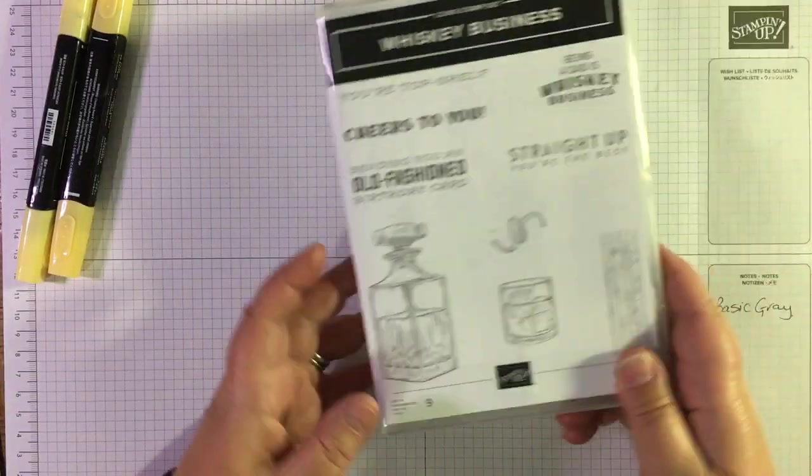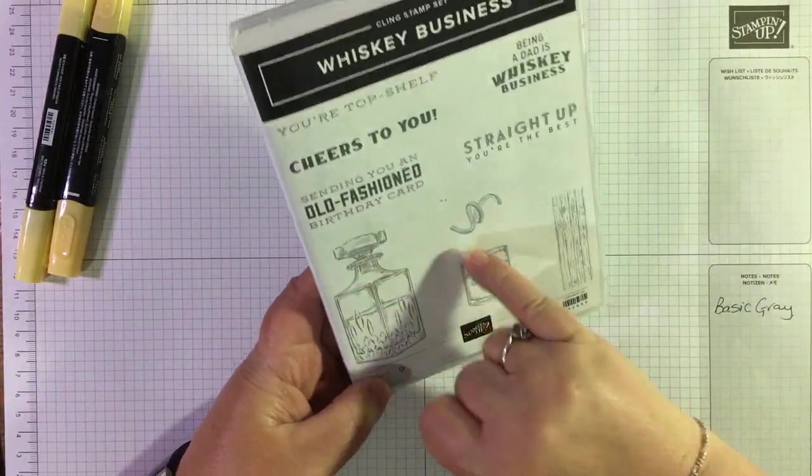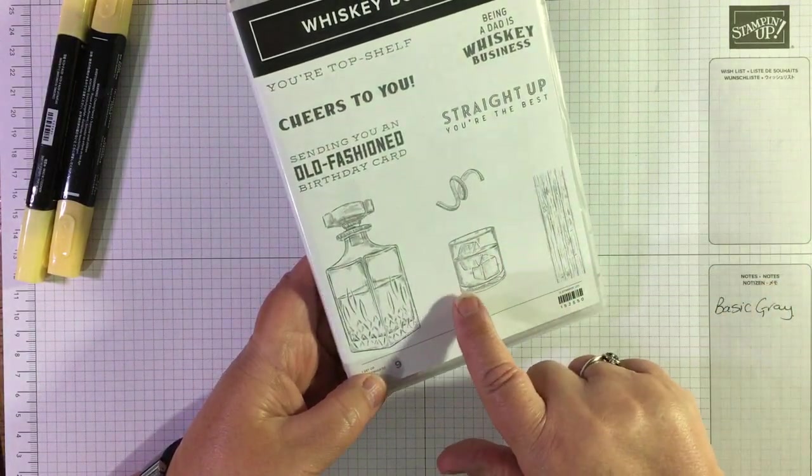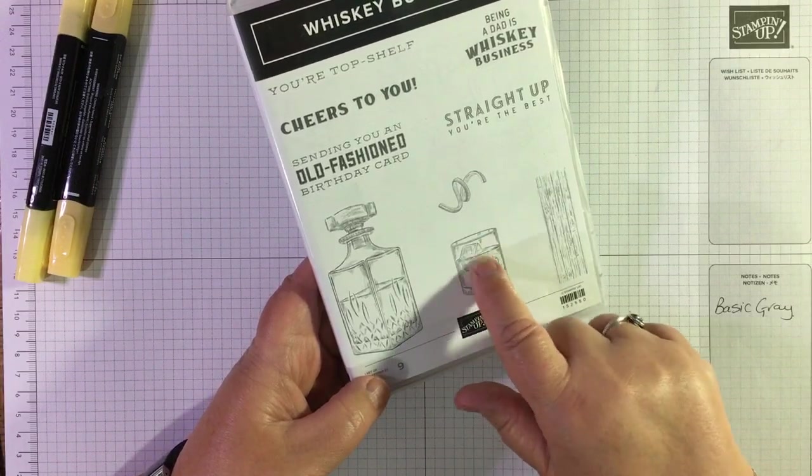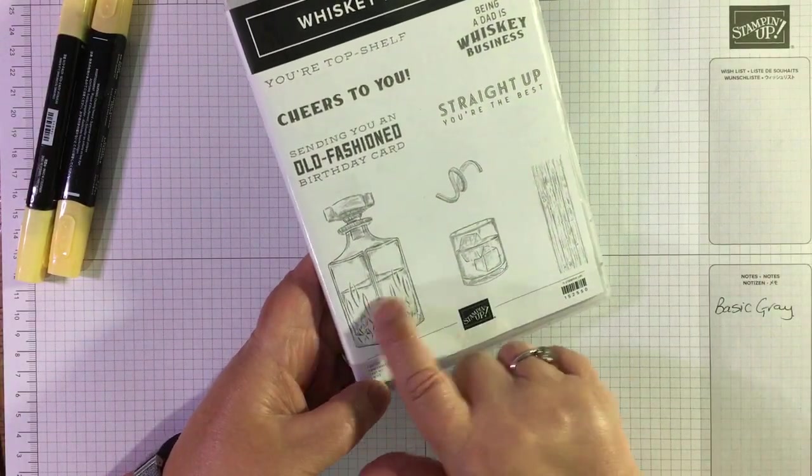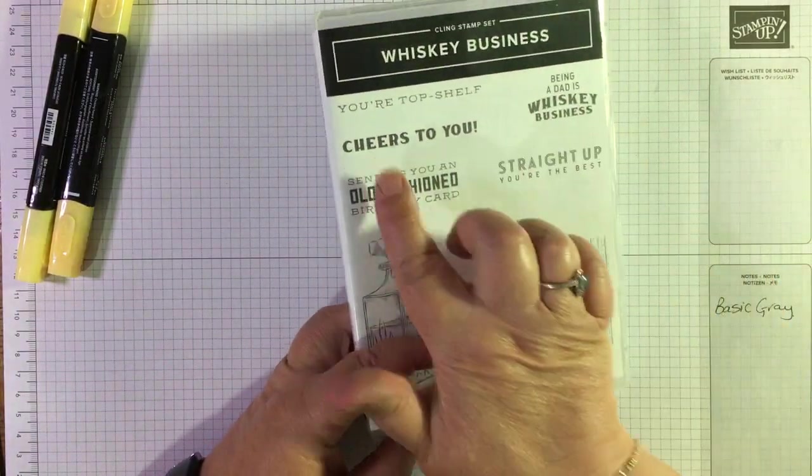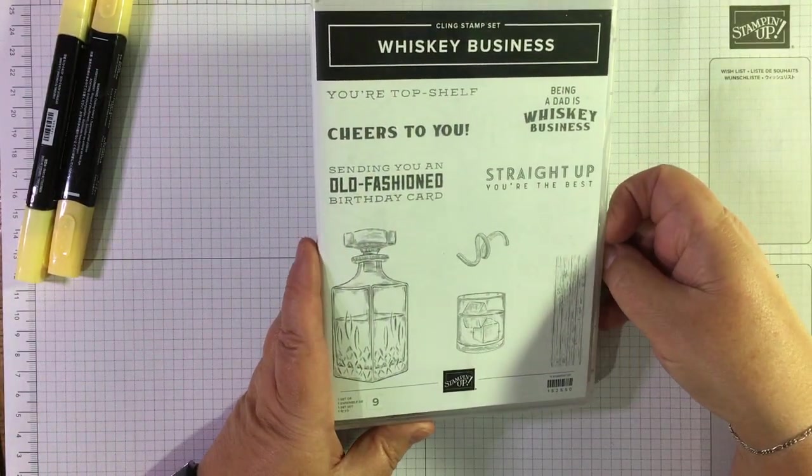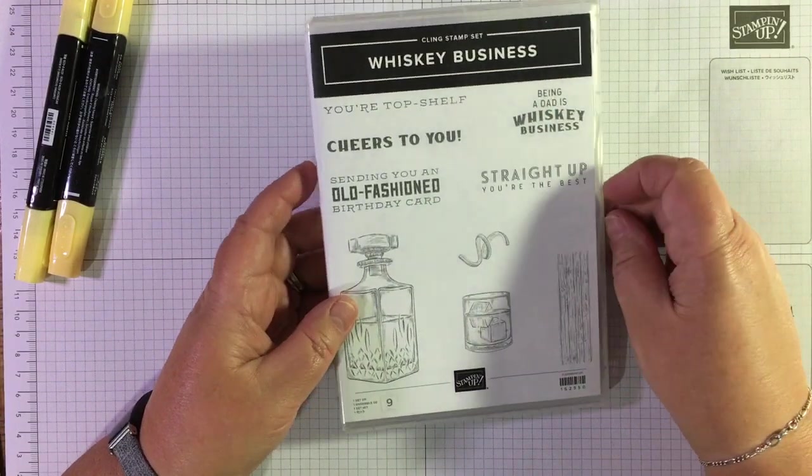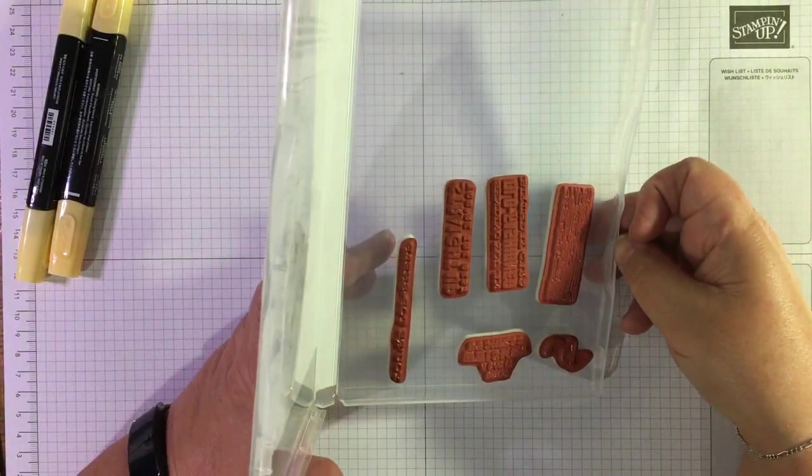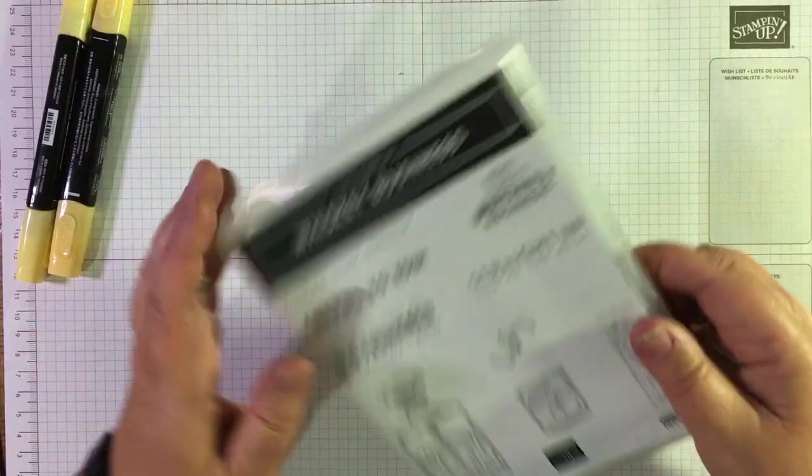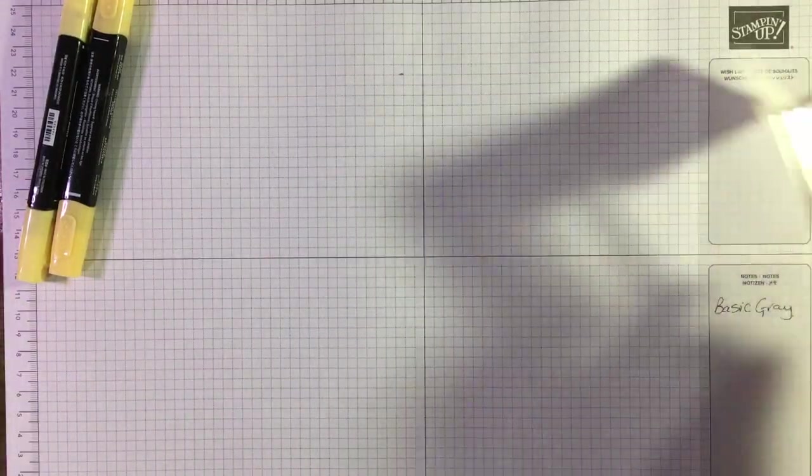This is a great wee set, so you've got your decanter, you've got a bit of peel, you've got this wood effect stamp which is really good for background, and the glass with the ice cubes in. This could be any kind of spirit, it doesn't even have to be spirits, it could be juice, it could be lemonade. But I'm just going to use the Cheers to You sentiment here. You've got Top Shelf, Sending You an Old-Fashioned Birthday Card, Straight Up You're the Best, and Being a Dad is Whisky Business. I'm not sure about that one, but they're really nice. I like the wood texture as well here. I haven't used it in this particular card.